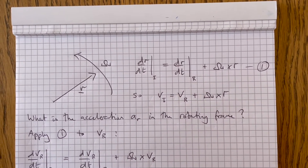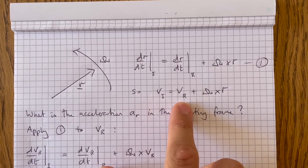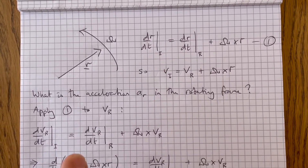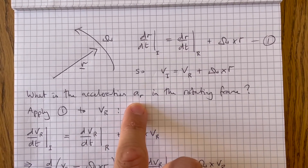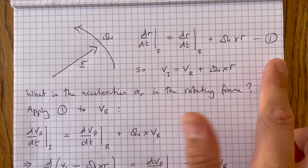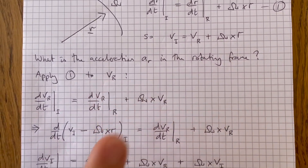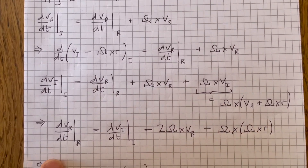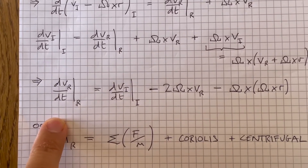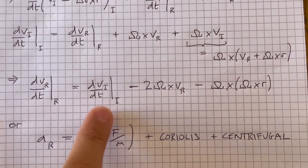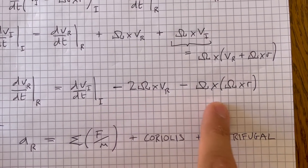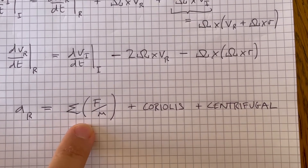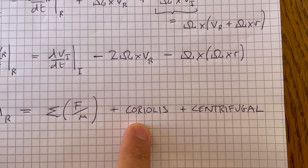This gives an equation for the absolute and relative velocities vi and vr. Equation one can be applied to any time derivative, and we see the acceleration ar in the rotating frame. We apply equation one to the velocity vr. If we then substitute vi, rearrange and expand, we can write down an expression for the acceleration relative to the rotating frame in terms of the absolute acceleration. That is the sum of the physical forces,